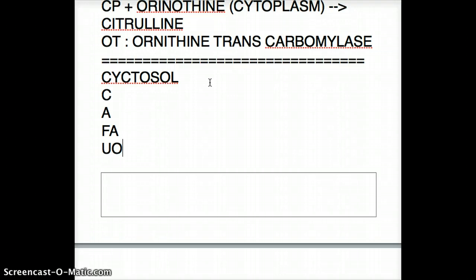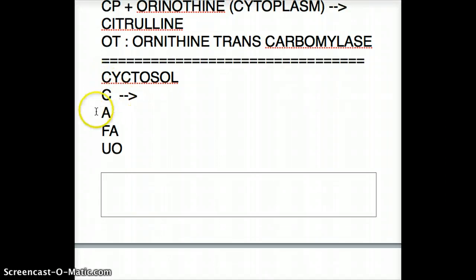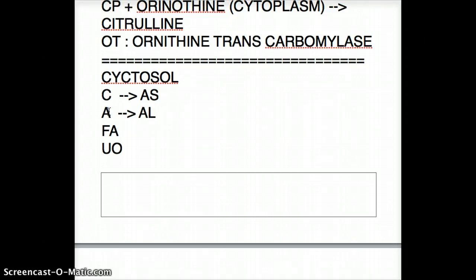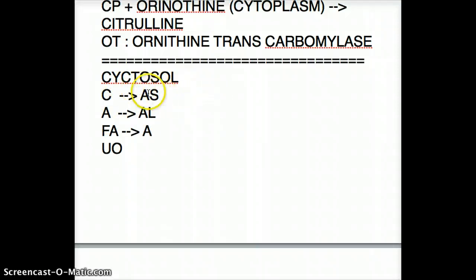From C to A, this process uses an enzyme called argininosuccinate synthetase (AS). From A to F-A, we need an enzyme called argininosuccinate lyase (AL). And from F-A to U-O, this is achieved by arginase (A). So the enzyme mnemonic is A-S, A-L, A. Citrulline becomes argininosuccinate via argininosuccinate synthetase.